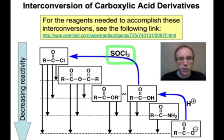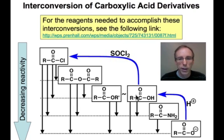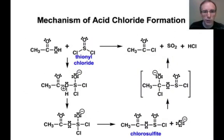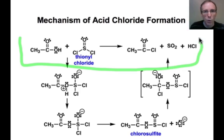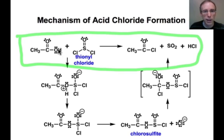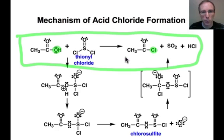Because this is such an important reagent, let's look at the mechanism by which the carboxylic acid is converted into the acid chloride. The overall transformation and balanced stoichiometry is shown at the top. We can recognize this as a type of substitution at a carbonyl carbon — the hydroxyl group of the carboxylic acid is replaced with a chloride, that chloride coming from the reagent thionyl chloride.